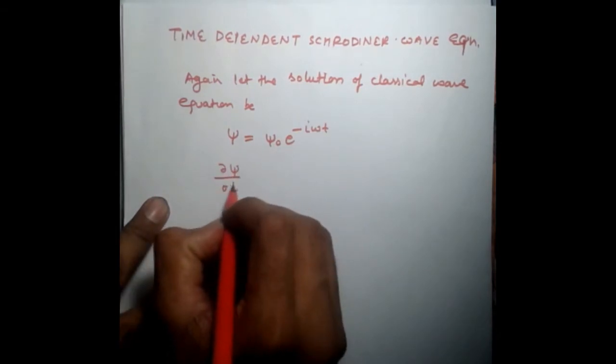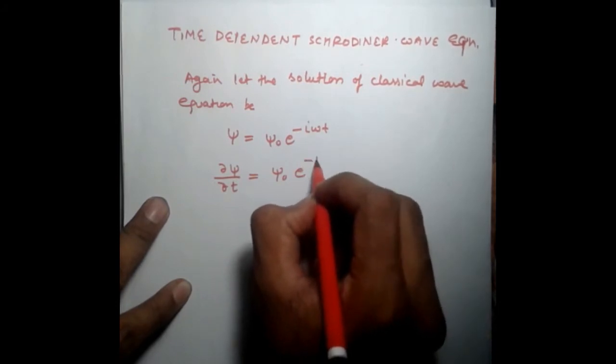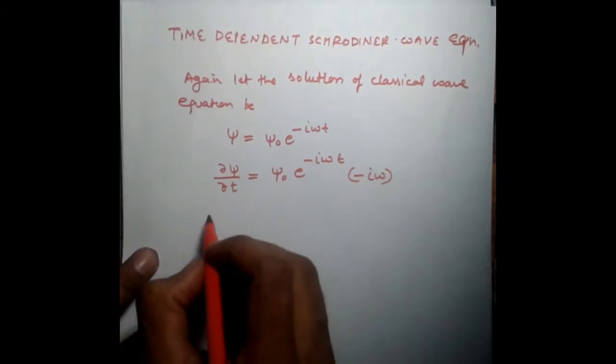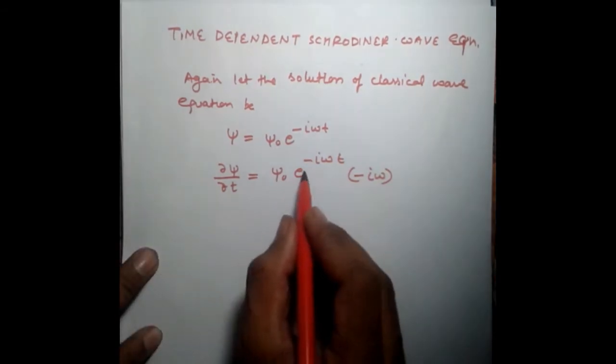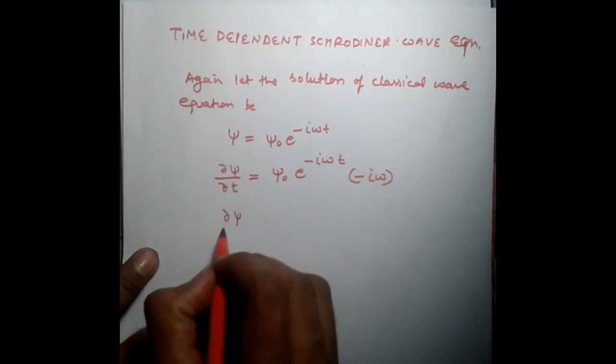Differentiating it with respect to t once, we get ∂ψ/∂t = ψ₀e^(-iωt)(-iω). And this ψ₀e^(-iωt) is equal to ψ, therefore ∂ψ/∂t is equal to ψ(-iω).